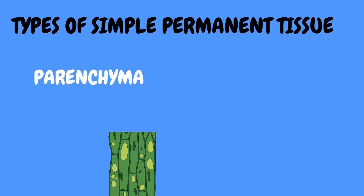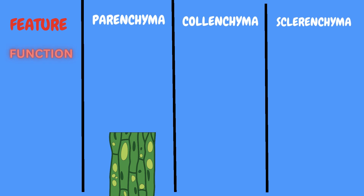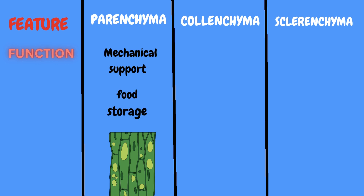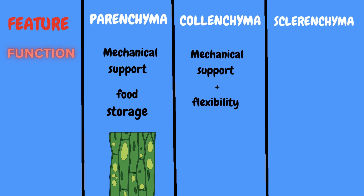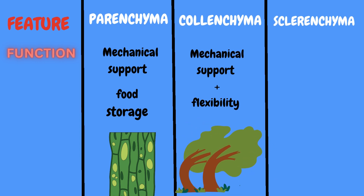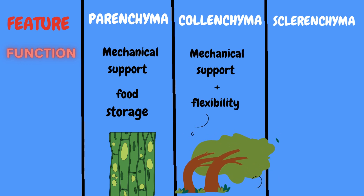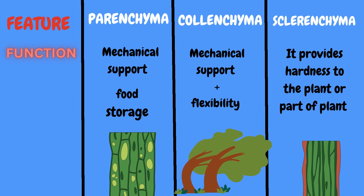Now let's compare the three basic types of simple permanent tissue: parenchyma, collenchyma and sclerenchyma, based on several features. The first feature is their function. If I talk about parenchyma, it provides mechanical support to plants — meaning protection — and it is also involved in food storage. In the case of collenchyma tissue, it also provides mechanical support to the plant but additionally provides flexibility, which is why some plants with green stems manage to withstand even high wind currents. But on the other hand, sclerenchyma provides strength and rigidity to the plant — it hardens up the plant to protect it.